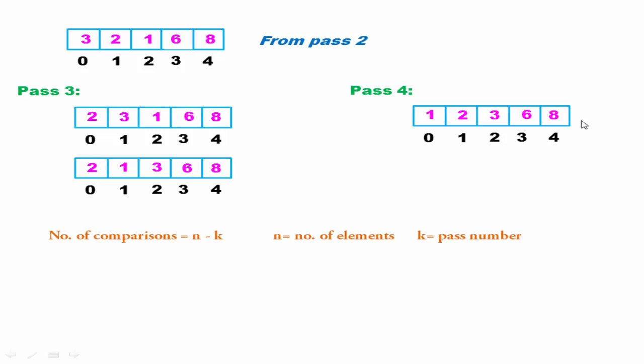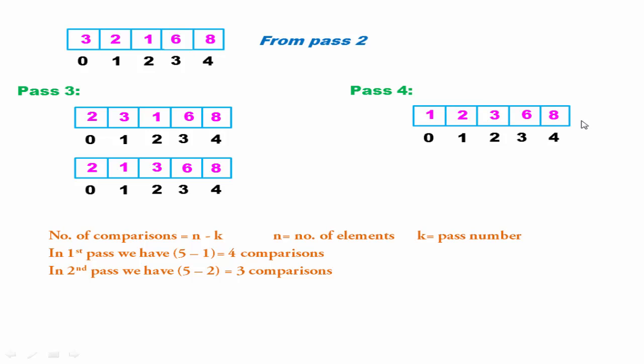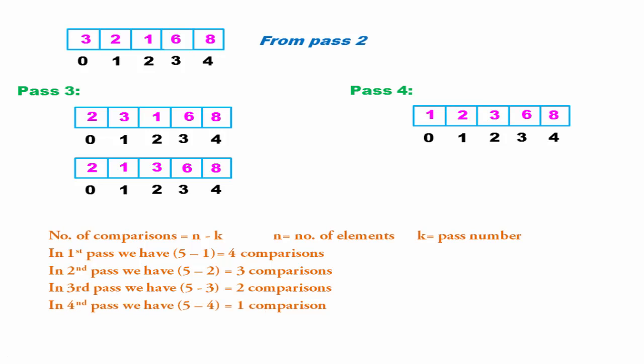In each pass, we require n minus k comparisons, where n equals the number of elements and k equals the pass number. For this example, in pass 1 we require 5 minus 1 equals 4 comparisons; in pass 2, 3 comparisons; in pass 3, 2 comparisons; and in pass 4, 1 comparison.